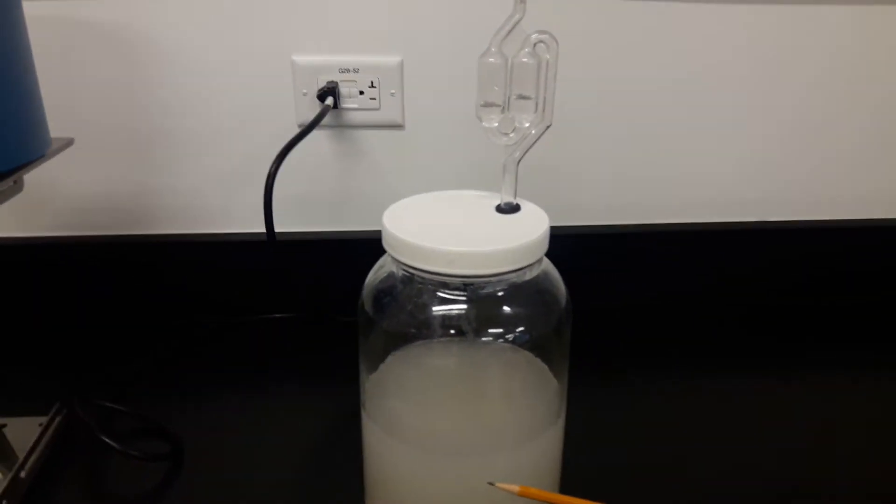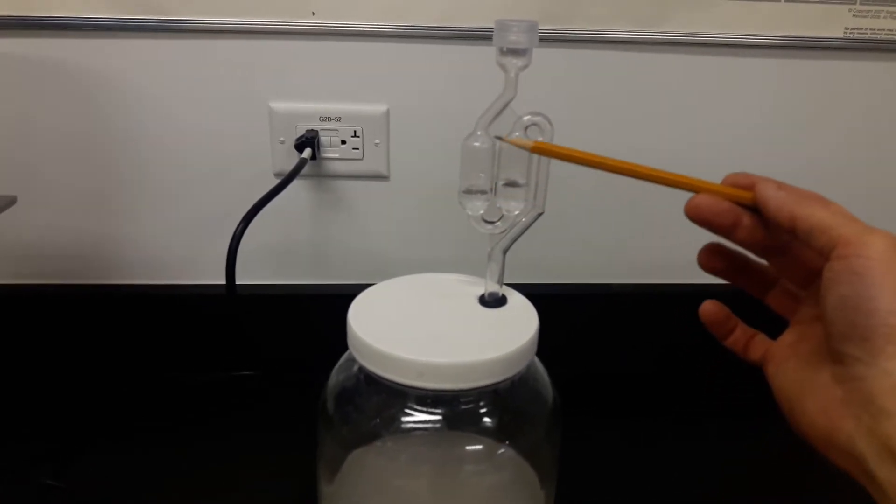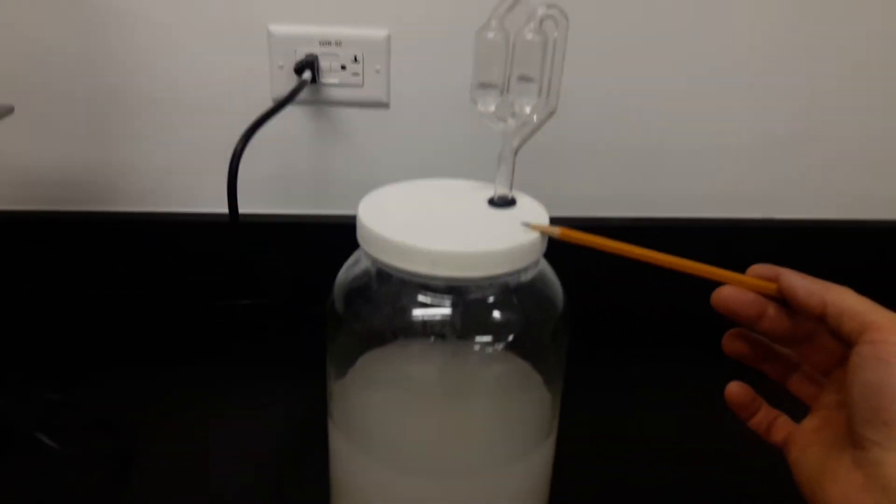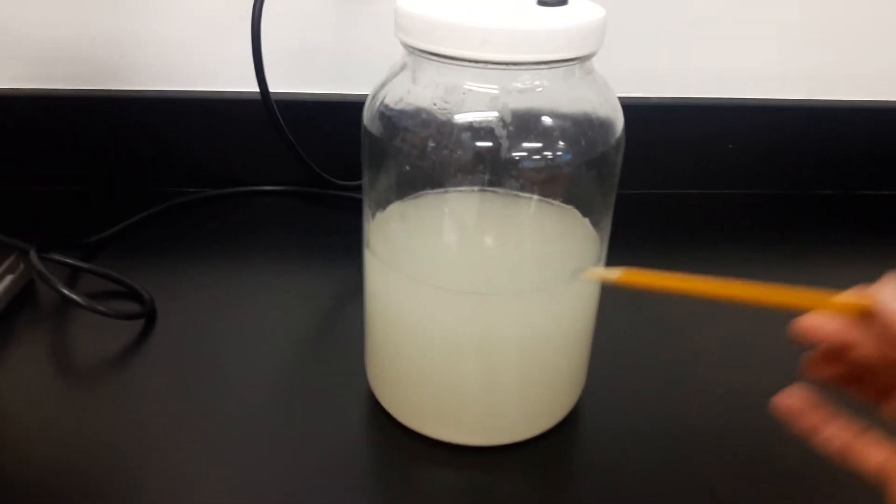It will build up and explode the jar. So therefore we have this airlock mechanism. This lets the carbon dioxide out and the lid keeps the alcohol from evaporating.